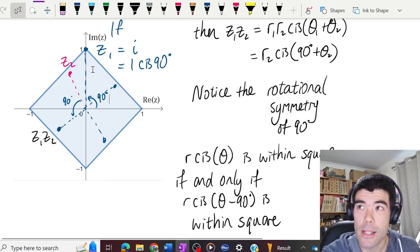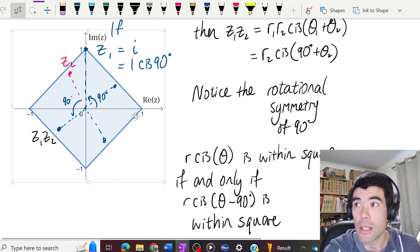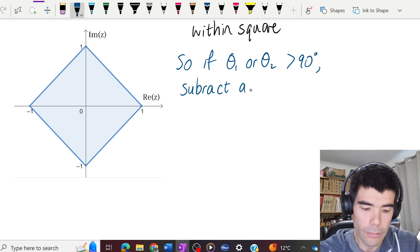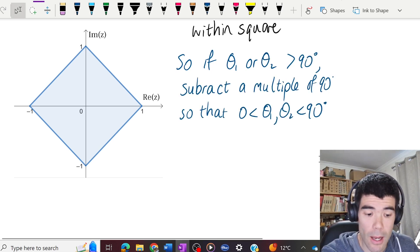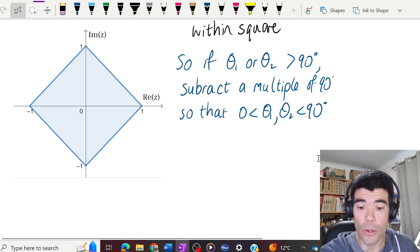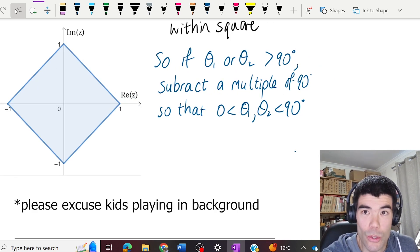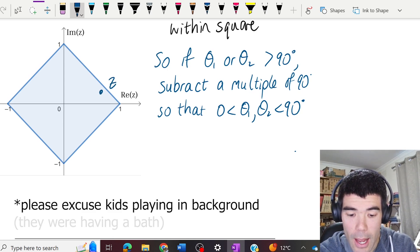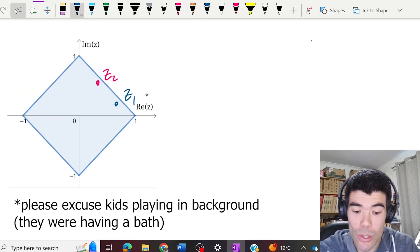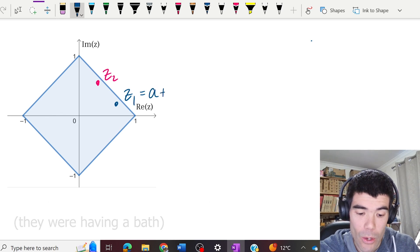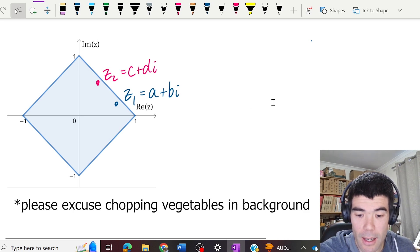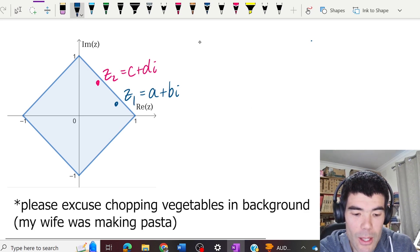It doesn't matter if we add 90 degrees or subtract 90 degrees or subtract any multiple of 90 degrees, because of the symmetry of the square, the distance from the point to the edge of the square is going to be the same. That's actually really useful, because now we can simplify our problem a little bit. And no matter where z1, z2 are, we can bring them back to the first quadrant, just by subtracting a multiple of 90 degrees.